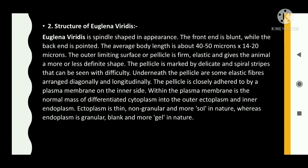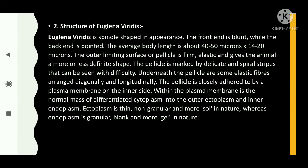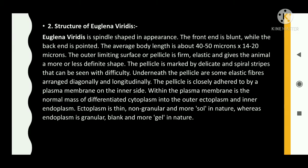Structure of Euglena viridis: Euglena viridis is spindle-shaped in appearance. The front end is blunt while the back end is pointed. The average body length is about 40 to 50 microns by 14 to 20 microns. The outer limiting surface or pellicle is thin and elastic, giving the animal a more or less definite shape. The pellicle is marked by delicate spiral stripes that can be seen with difficulty. Underneath the pellicle are elastic fibers arranged diagonally and longitudinally, and the pellicle is closely adhered to by a plasma membrane on the inner side.